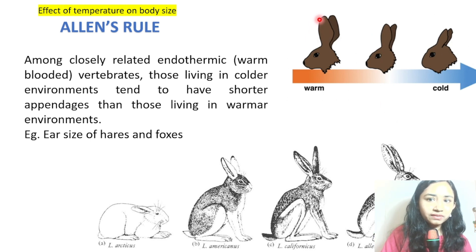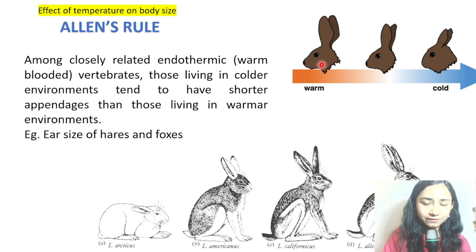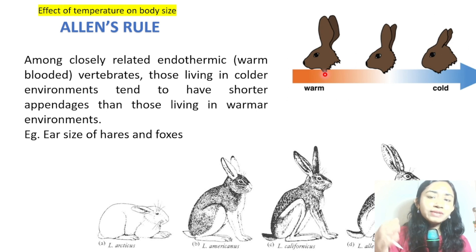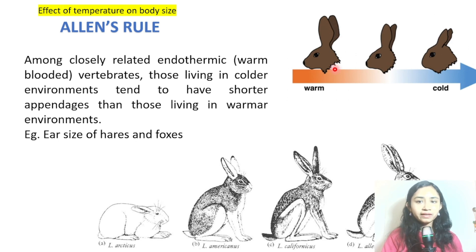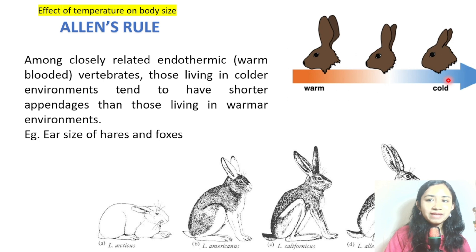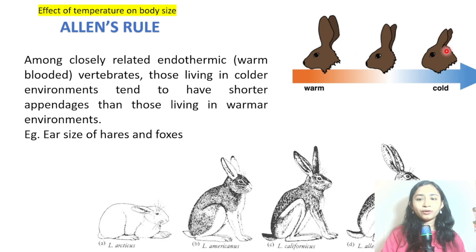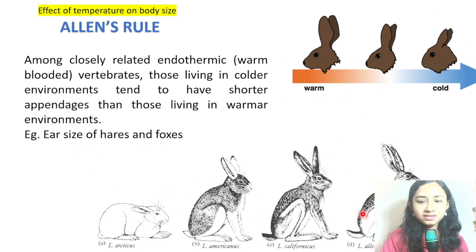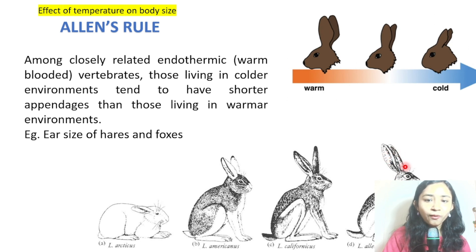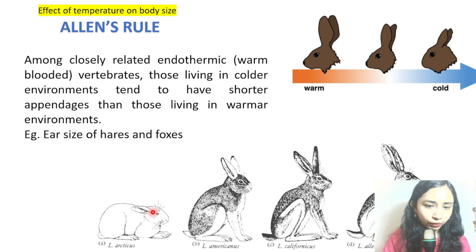In warmer temperatures, the surface area is large, allowing animals to lose heat more easily — because in warm climates you need to lose heat to survive properly. Just as we sweat during summer to reduce heat, rabbits in warm conditions have a larger surface area to volume ratio to lose heat easily. In cold climates, their surface area is reduced to retain heat. Here you can see the hares — the same species, Lepus sp. — with reduced appendages in cold climates to retain more heat.